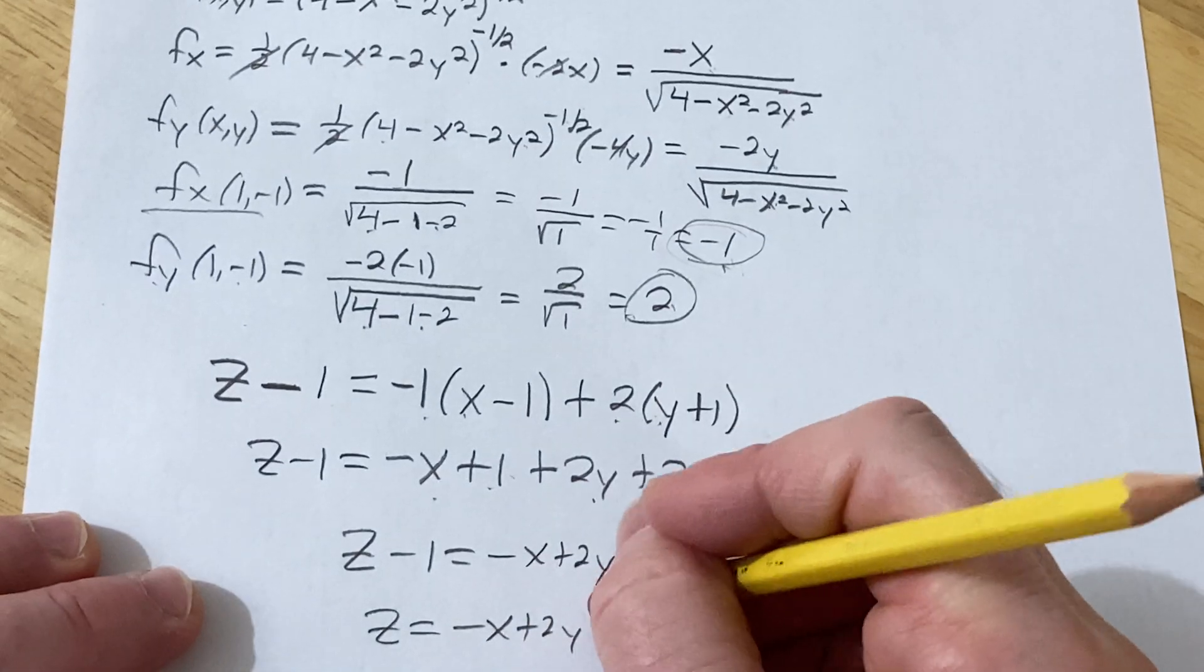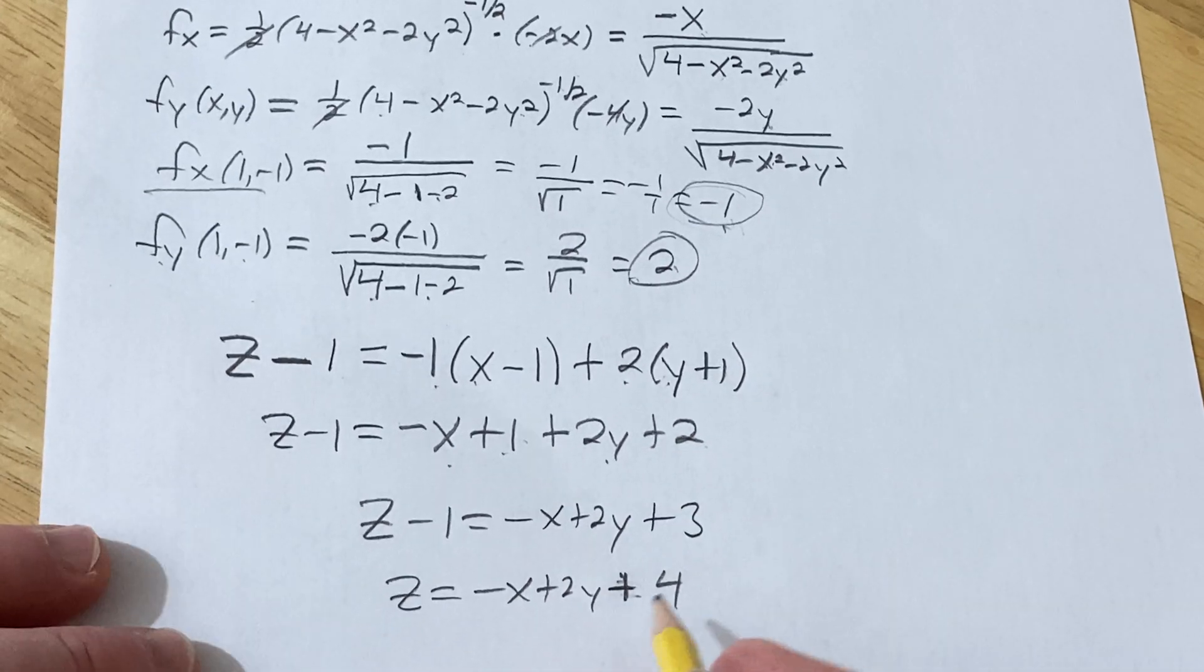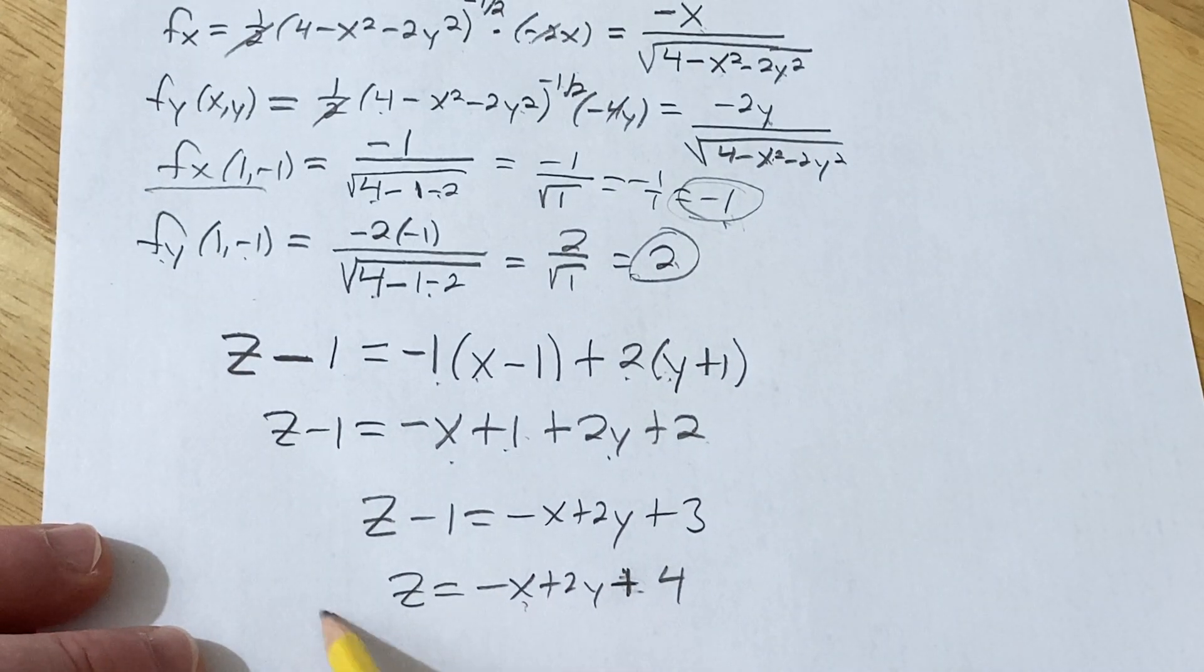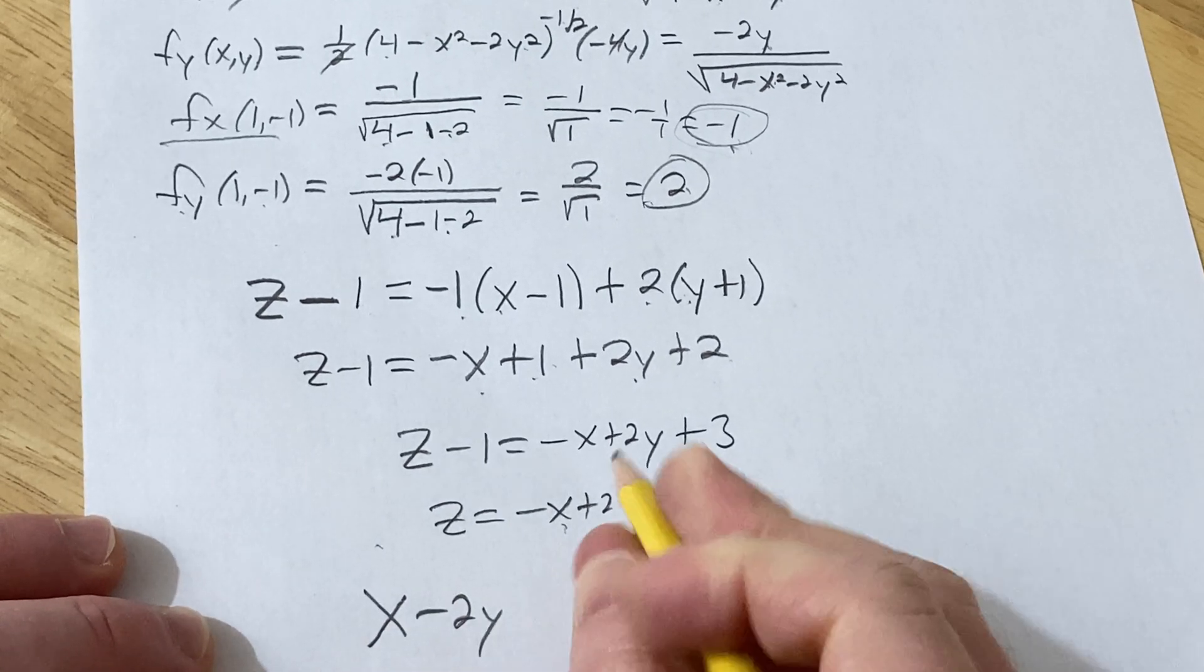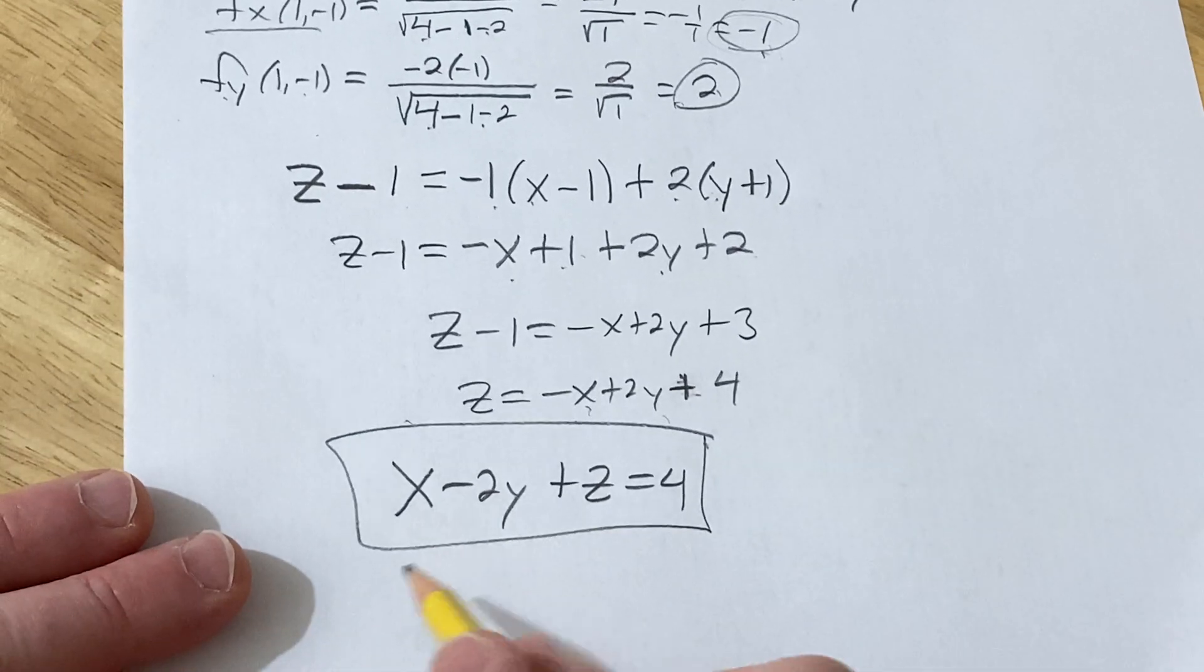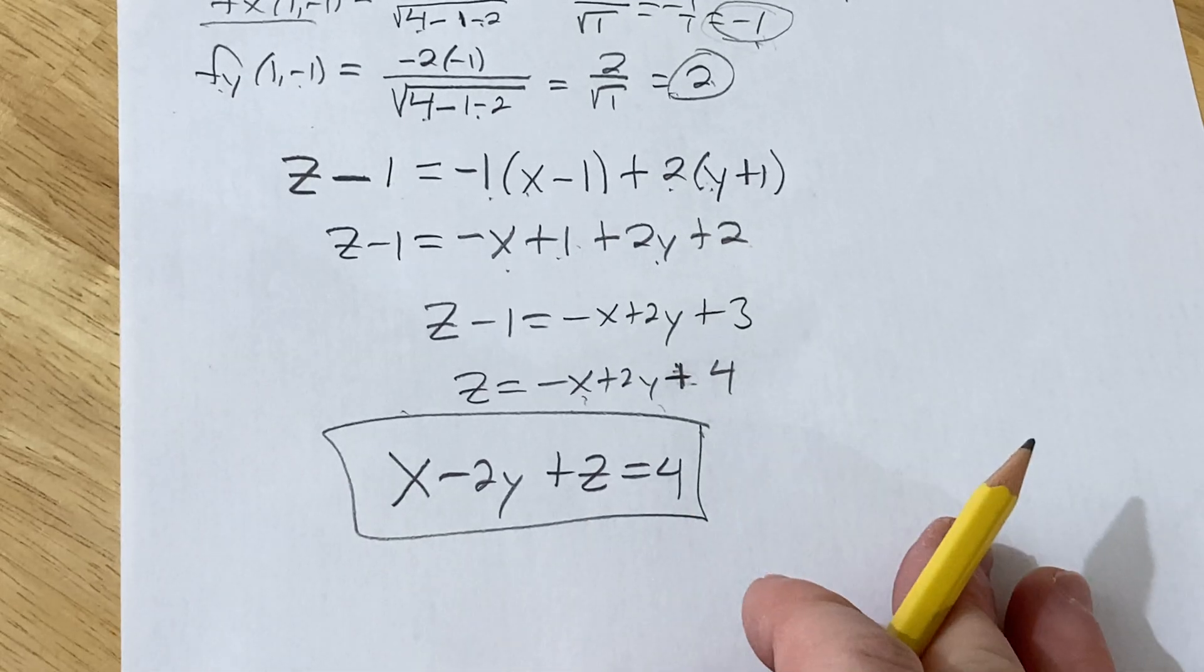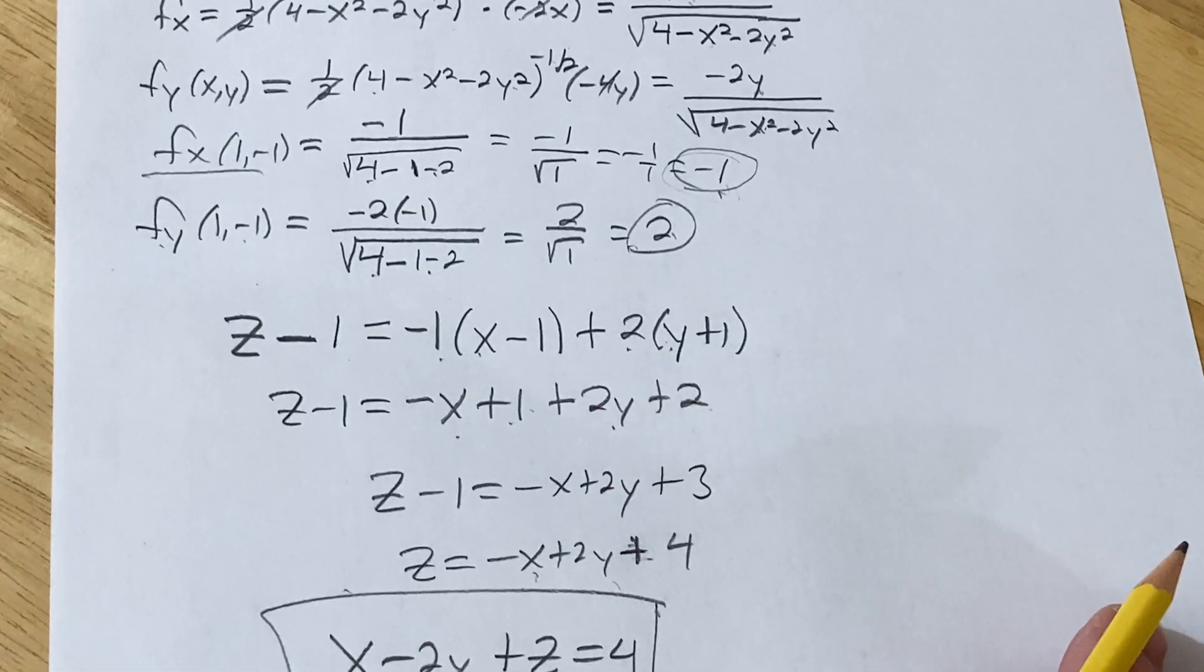You can write it in a nicer way. You can basically leave it like this, or if you like, you can add the x over and subtract the 2y, so it'll look like this, x - 2y + z = 4. It's a nicer way to write it, kind of like a nicer way to write the equation of a plane. So that's it. I just wanted to show you how to do a problem. Good luck.